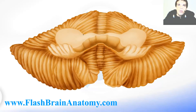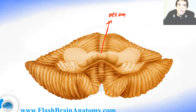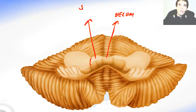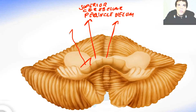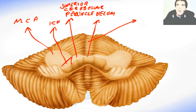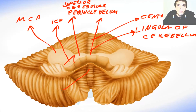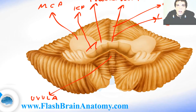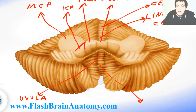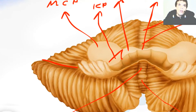Let's review all the labels. Here we had the velum and the superior cerebellar peduncle, the inferior cerebellar peduncle, and the middle cerebellar peduncle. Then we had the central lobe and the lingula of the cerebellum. Over here we had the uvula, and this over here was the pyramid of the vermis. This fissure over here was called the horizontal fissure.